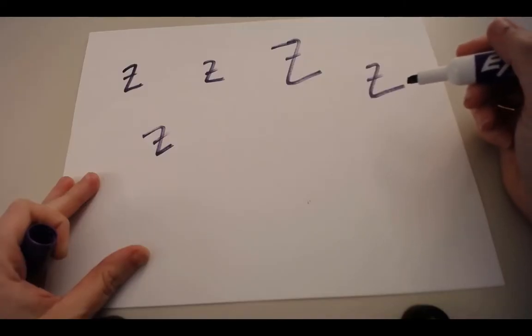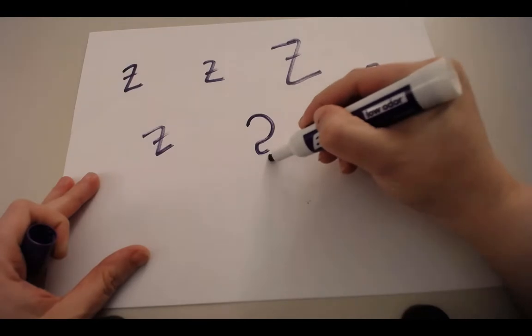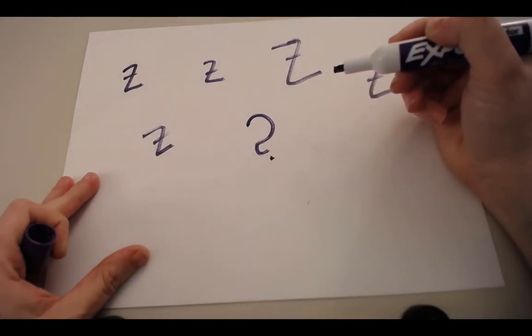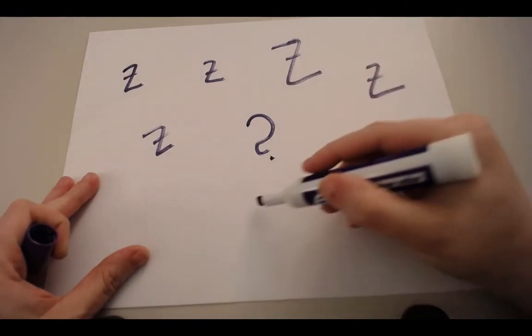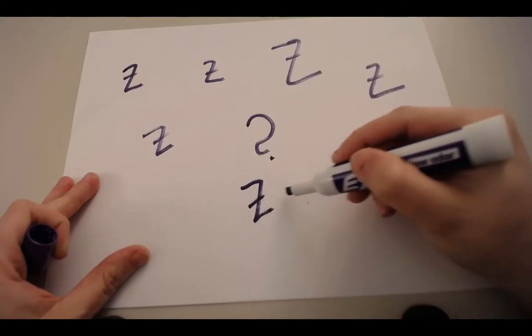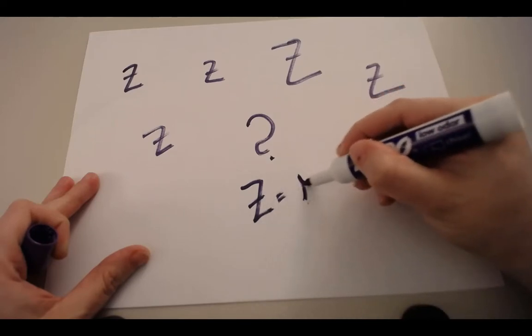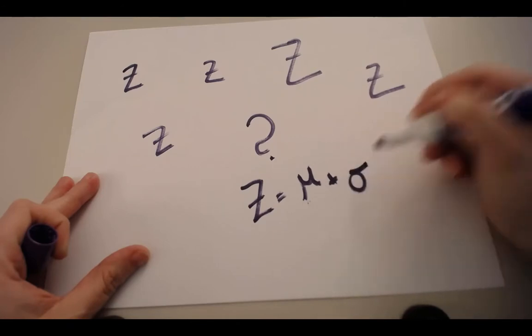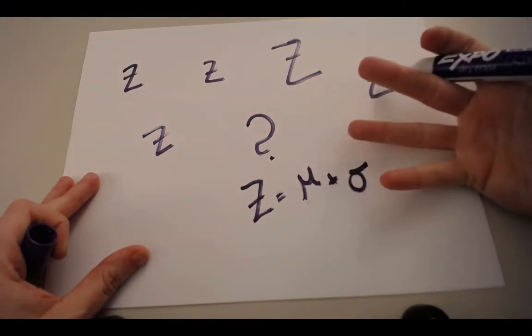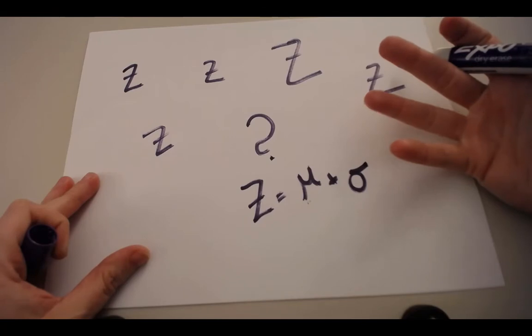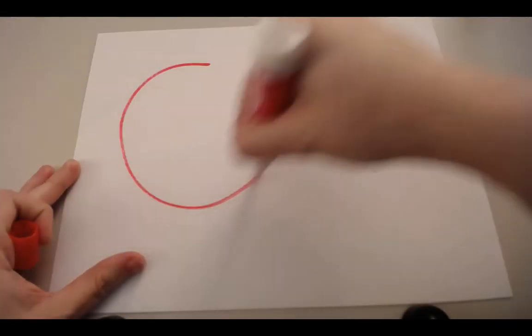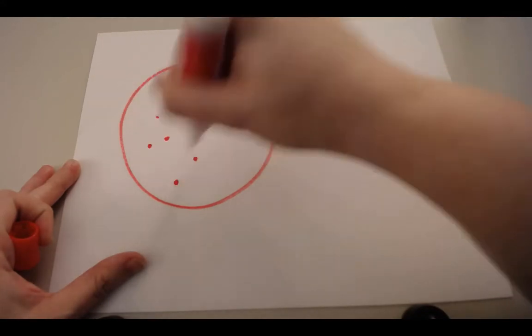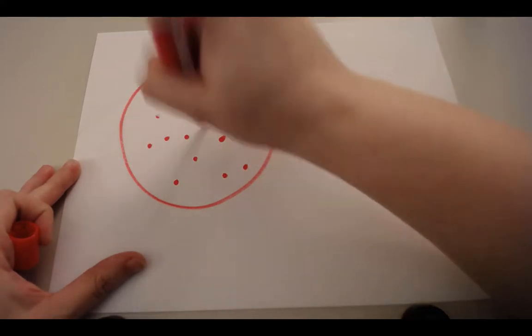So you've been learning about z-scores, so why don't we just use z-scores for all the statistics that we're going to cover? Well, remember, to get a z-score, we have to know something about the population average and something about the population variance. But when do you know those things?